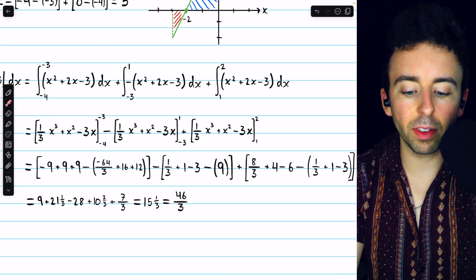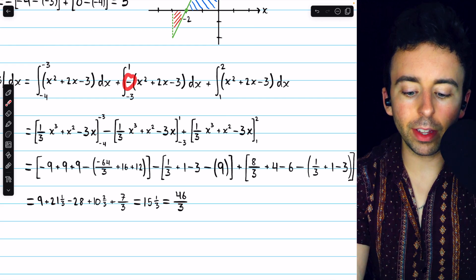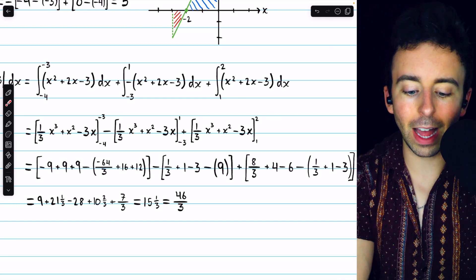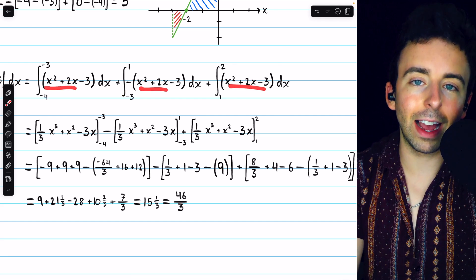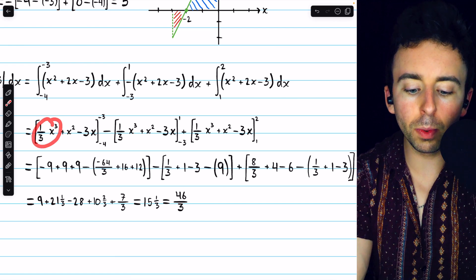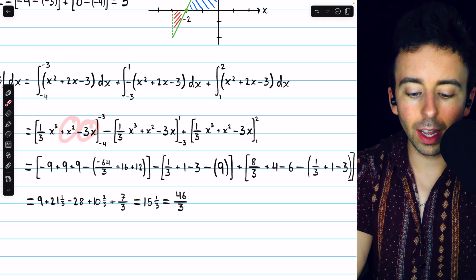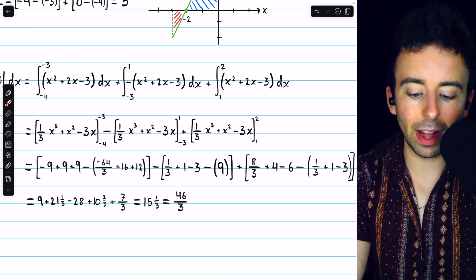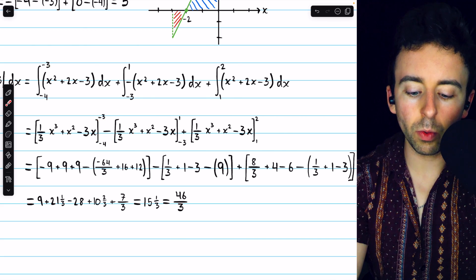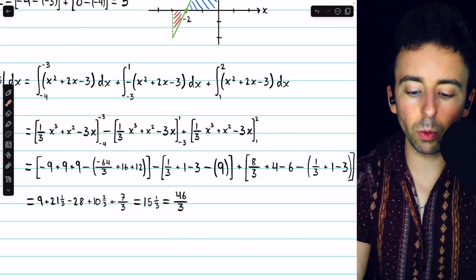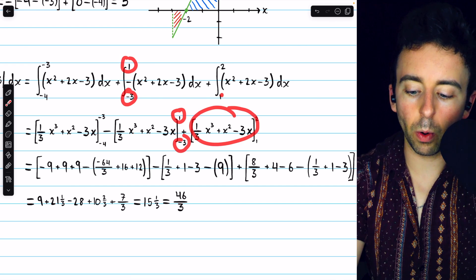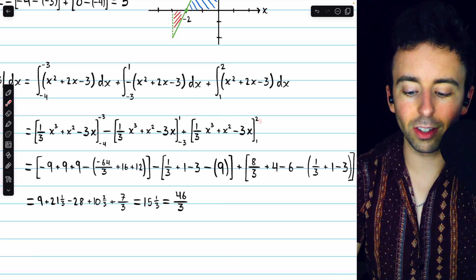Now all that remains is some tedious computation. The negative in the second integral we take out of the integral, so every integral has the same integrand — just that quadratic, which by the power rule integrates to one-third x cubed plus x squared minus 3x. In the first bracket, we evaluate from negative 4 to negative 3. In the second bracket, we have that negative factor out front and we evaluate from negative 3 to positive 1. And in the last bracket, we evaluate from positive 1 to positive 2.